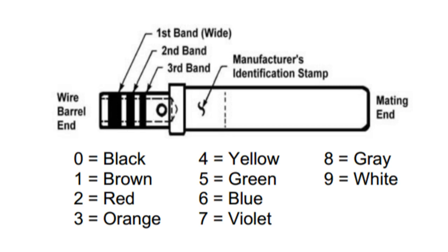Military contacts are identified by a series of three color bands, each representing a specific digit, known as the BINPT basic identification number code. The color bands are read from the wire barrel end of the contact or widest color band, then towards the mating end of the contact.